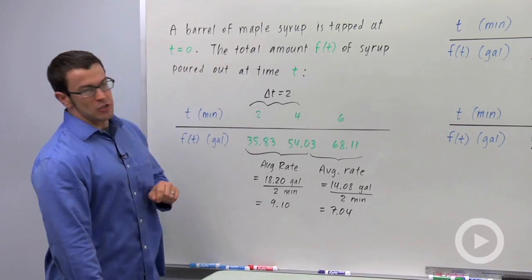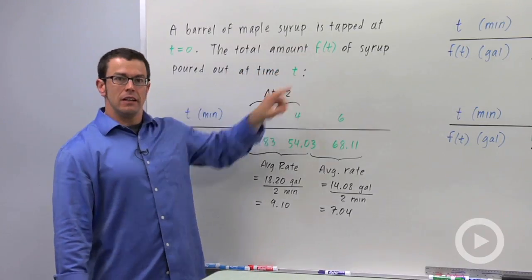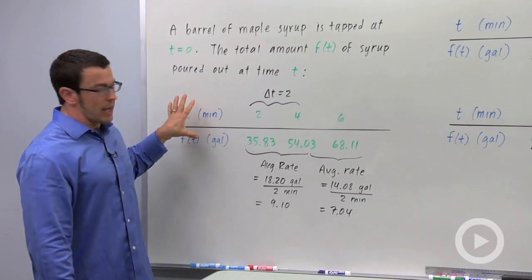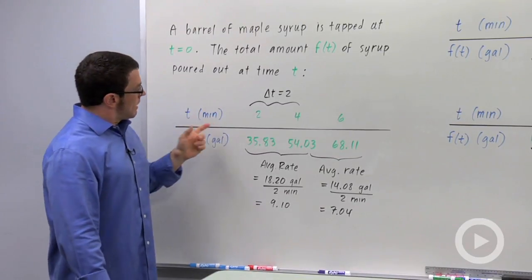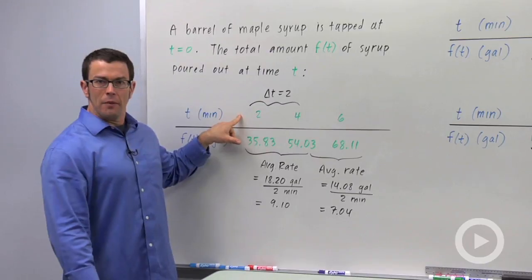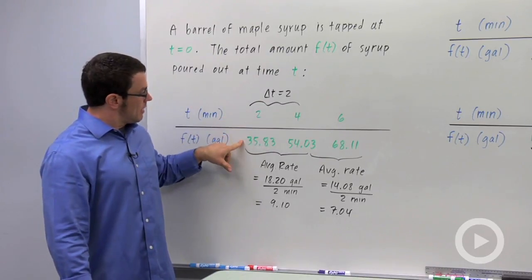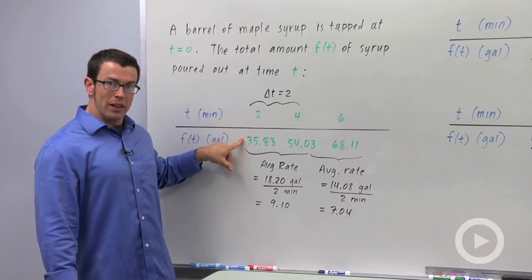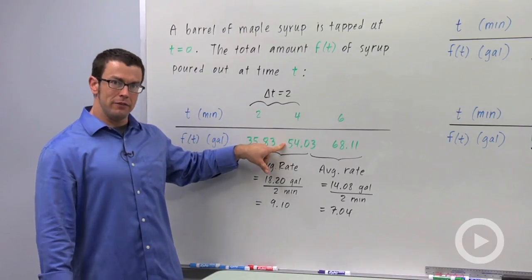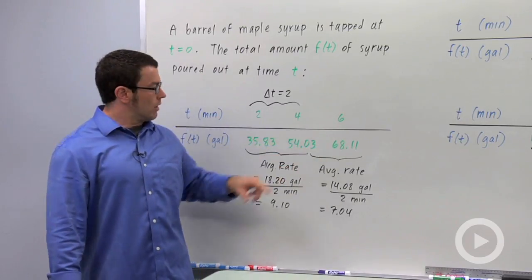A barrel of maple syrup is tapped at t equals 0. The total amount f of syrup that is poured out at time t is given by a table. Here I have values 2, 4, and 6 for time, and this is the amount of syrup that's leaked out by that time. At t equals 2, 35.83 gallons have leaked out. At t equals 4, 54.03. At t equals 6, 68.11.